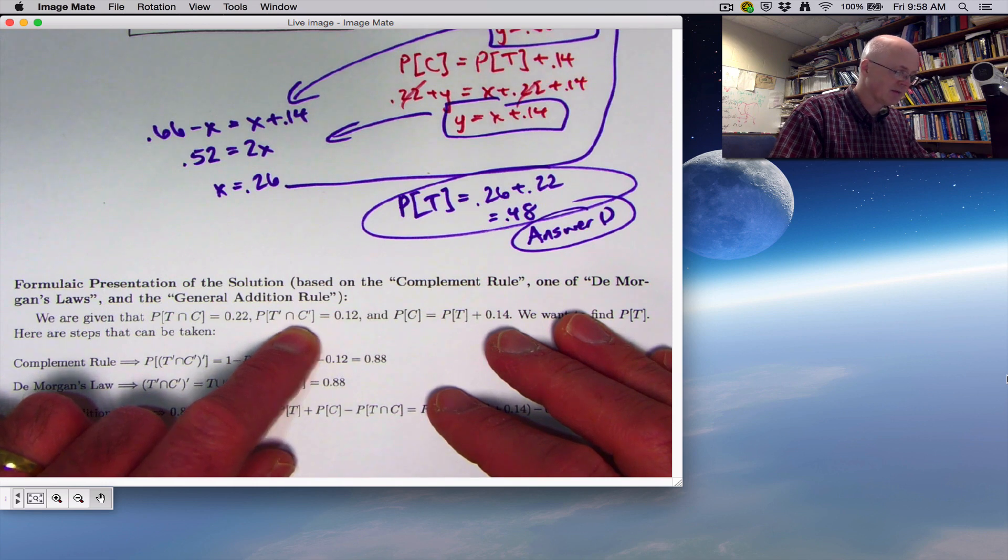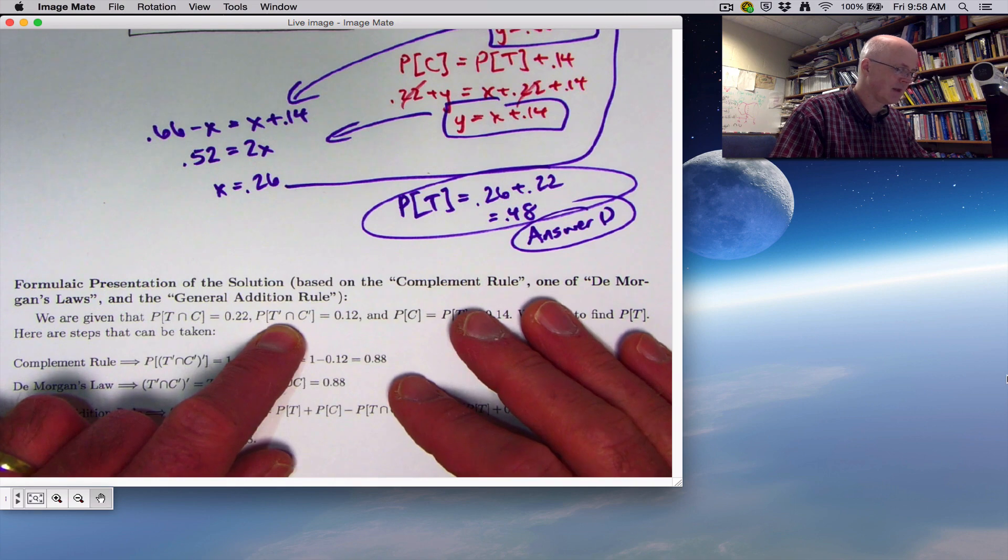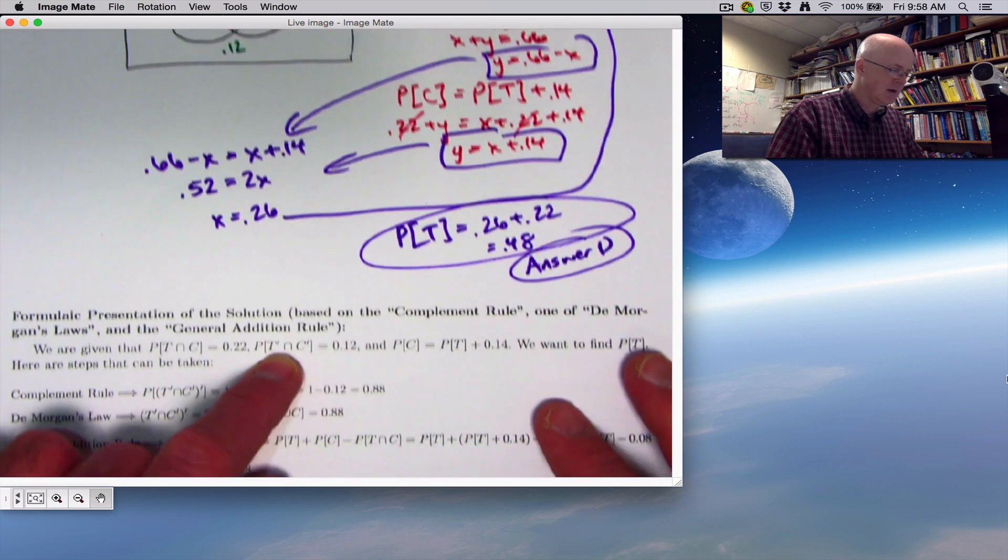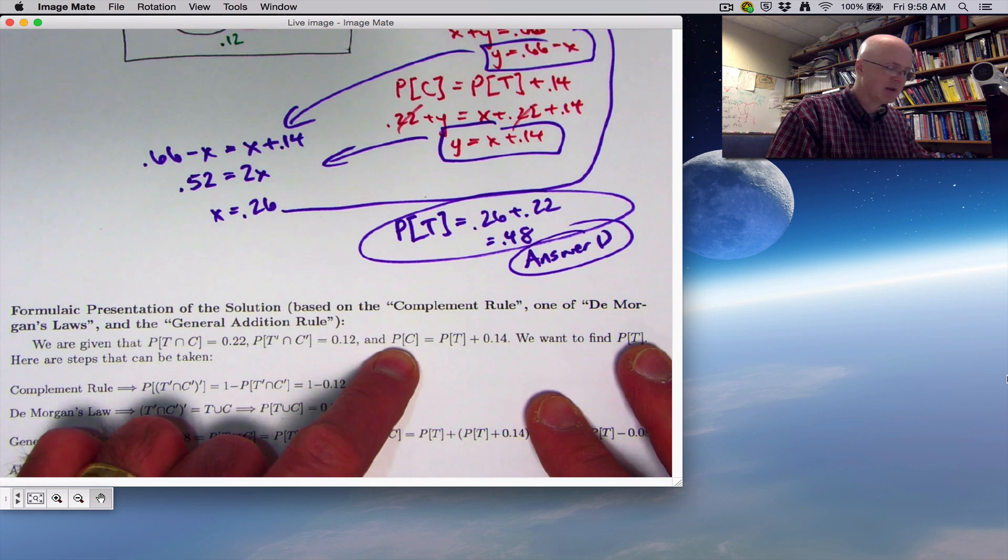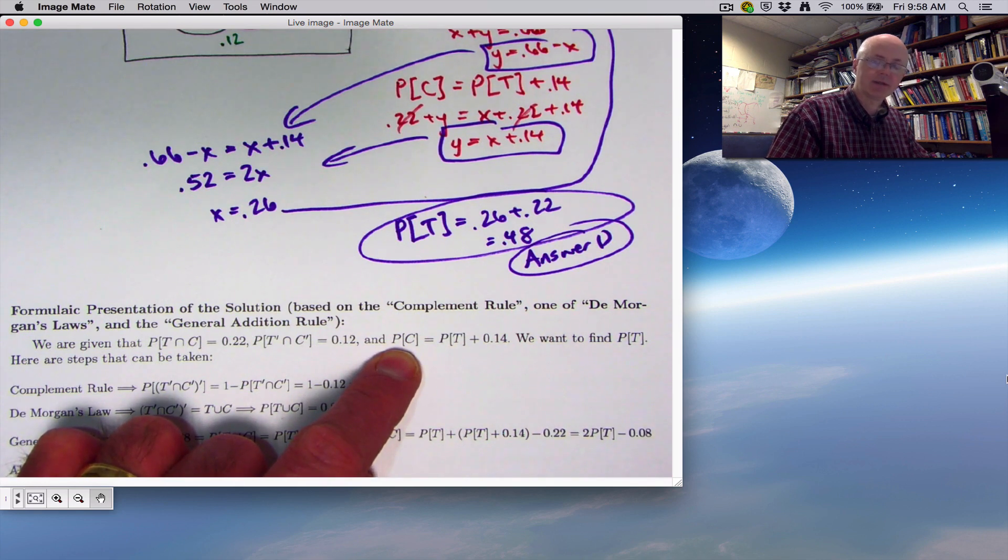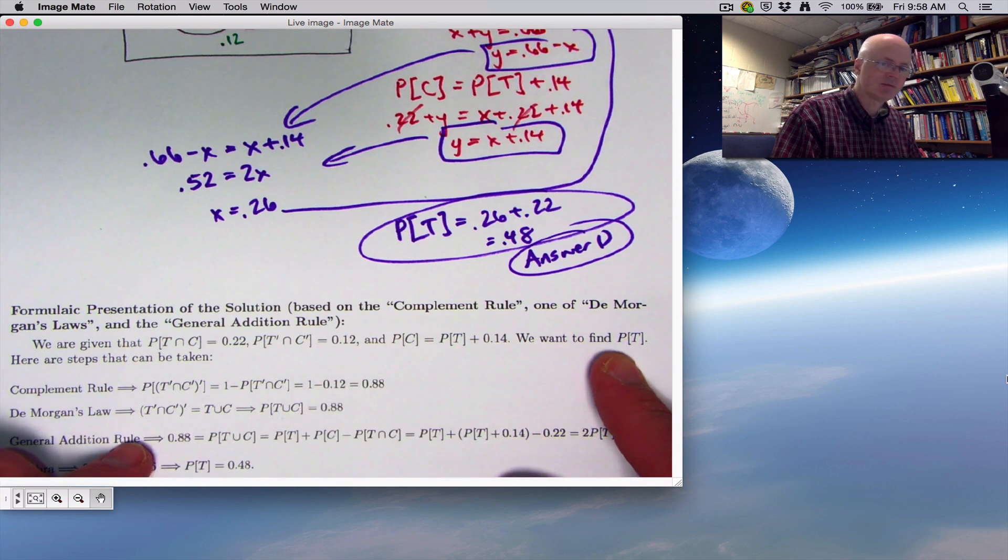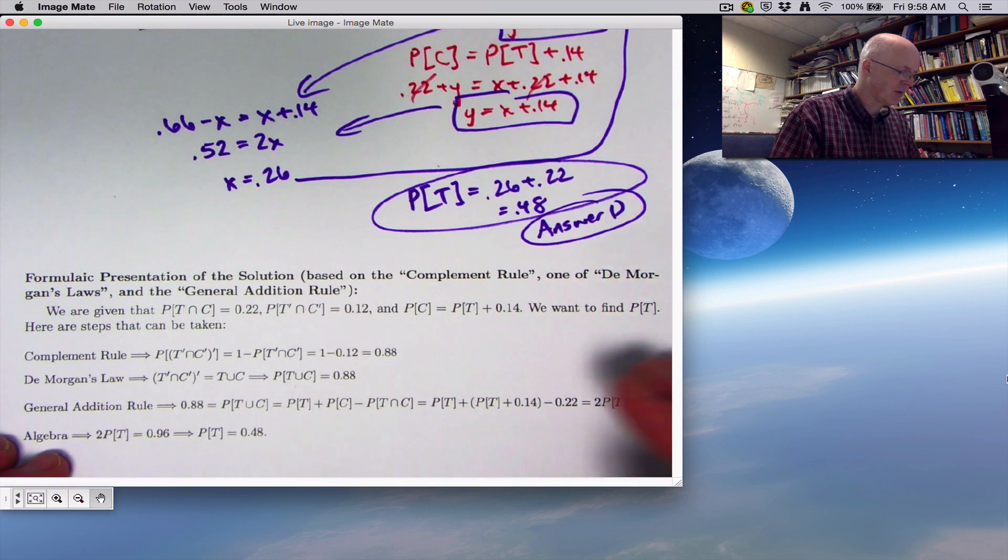T prime means not T, the complement of T. Also not C, not a chiropractor. We have an intersection symbol meaning and. That's the 0.12, we're outside of both of them. We're also told that the probability of visiting a chiropractor exceeds by 0.14 the probability of visiting a physical therapist. We want to find P of T.